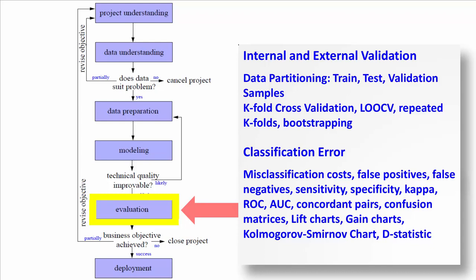When we talk about error on our classification models, we have a variety of things we can look at, including misclassification costs, false positives, false negatives, sensitivity, specificity, kappa, ROC, area under the curve, concordant pairs, confusion matrices, lift charts, gains charts, Kolmogorov-Smirnov chart, and D-statistics. We have covered an enormous amount of material in this class.